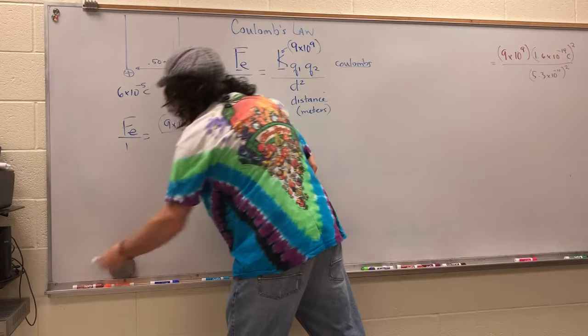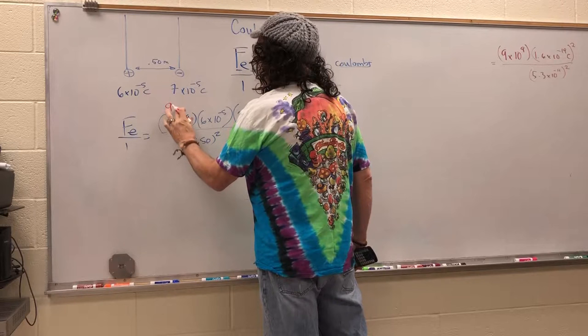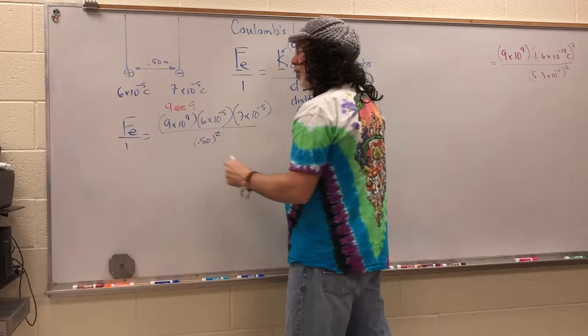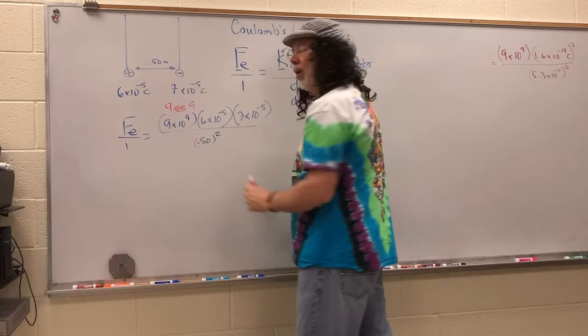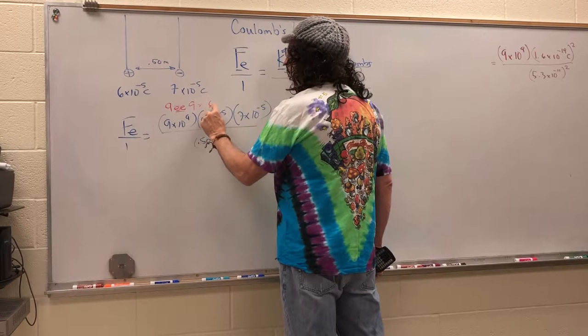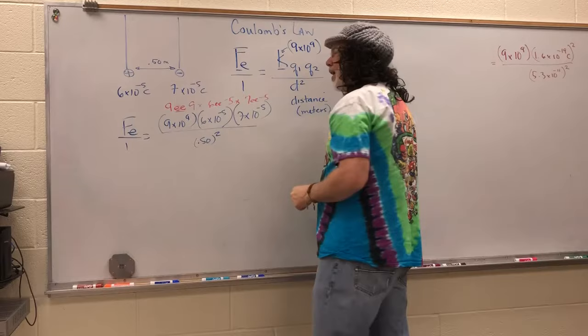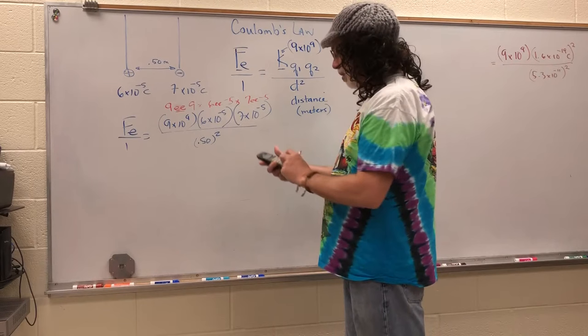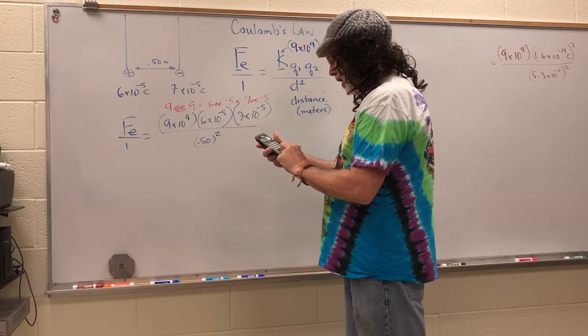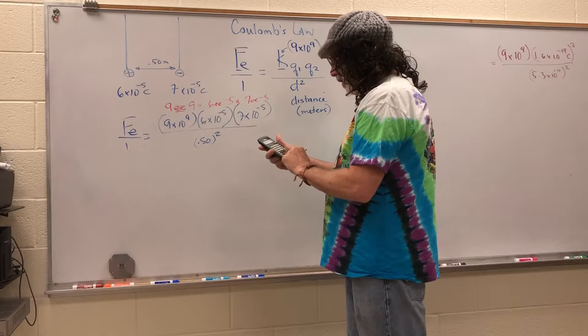When I type this in the calculator, I'm going to type 9 EE 9. The E represents that times 10 part on the calculator. Then I'm going to hit times 6 EE negative 5 times 7 EE negative 5. At that point, I usually hit enter and get a subtotal. So 9 EE 9 times 6 EE -5 times 7 EE -5.